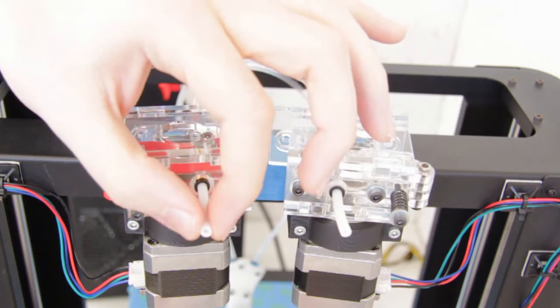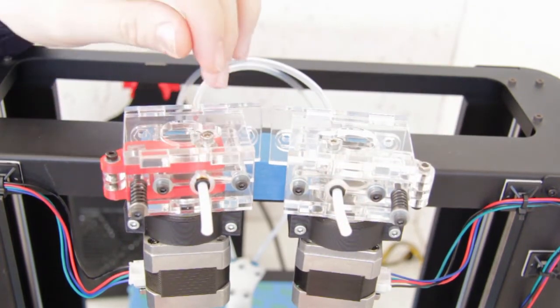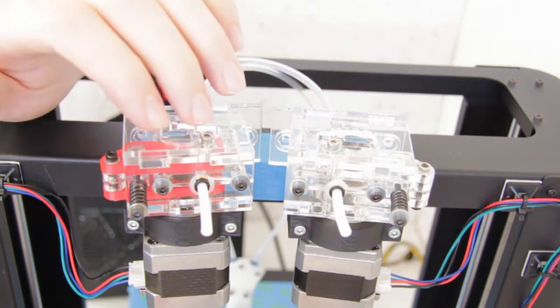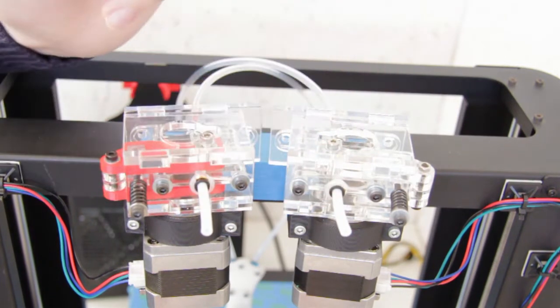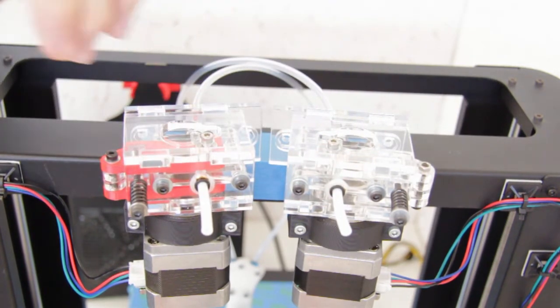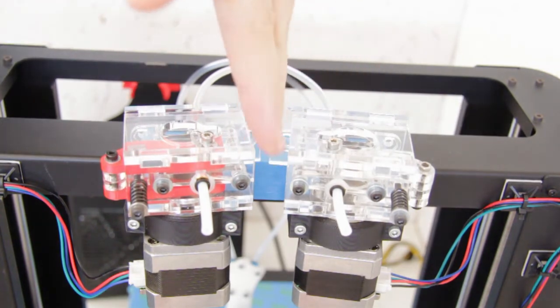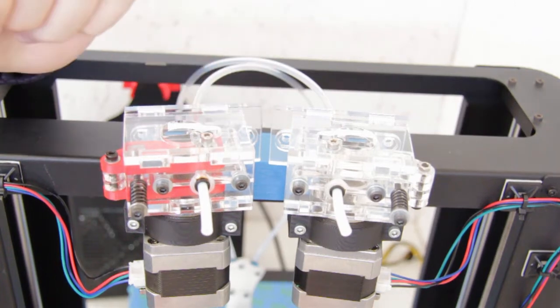We've got small PTFE tubes to guide the filament in and then the PTFE tube on the back and clips that hold all of the PTFE tubes in. I'll see if I can get a shot coming down so you can have a look and see inside the extruder.